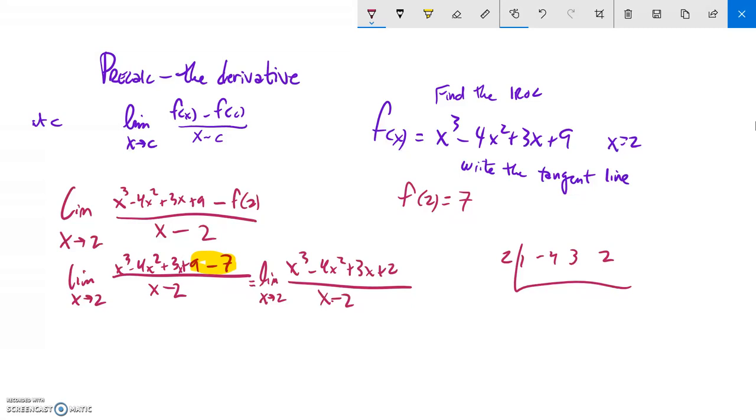The reason why I'm doing that is if I try to evaluate the limit right away just by plugging in 2, I'm dividing by 0, can't do it. So let me do this division and see what happens. 1, 2, negative 2, negative 4, negative 1, 2, 0.